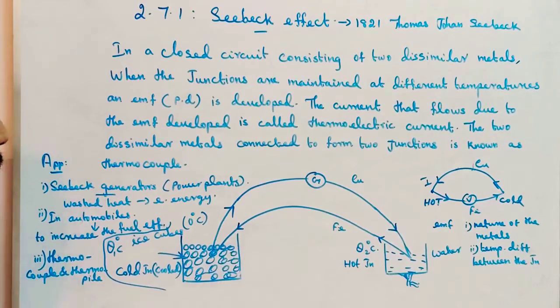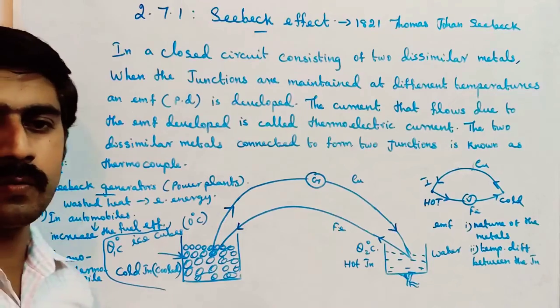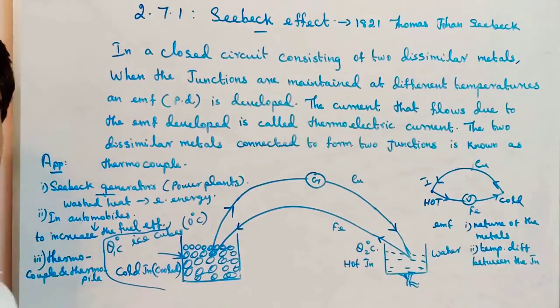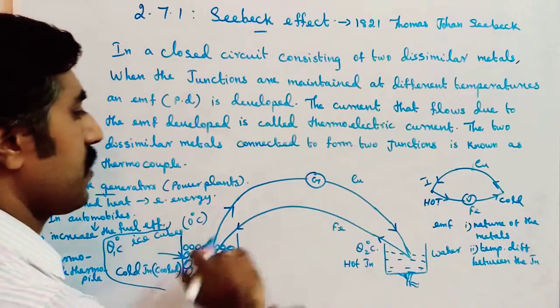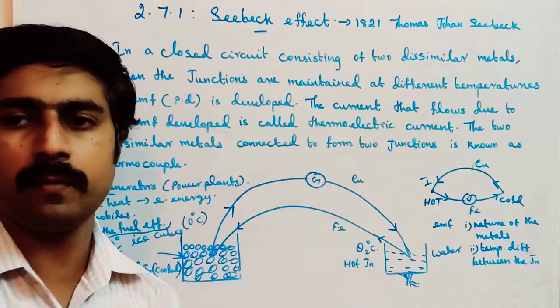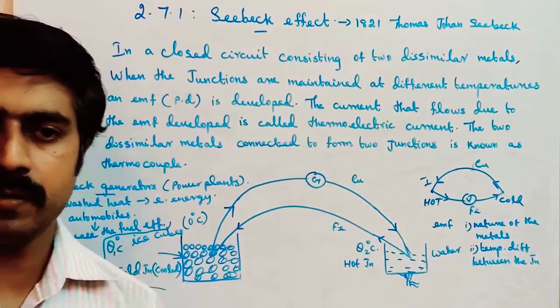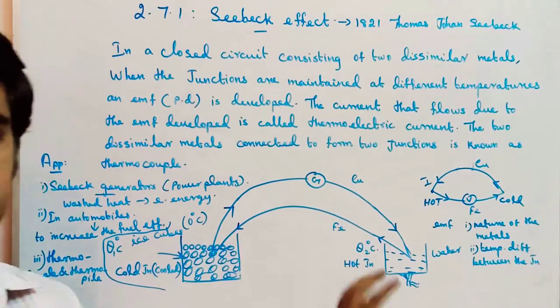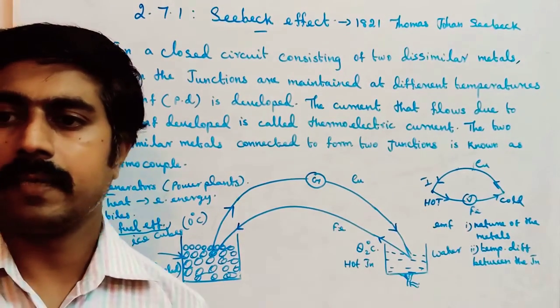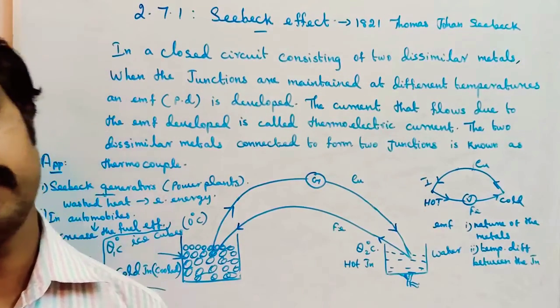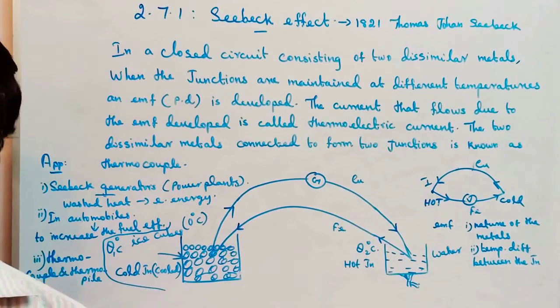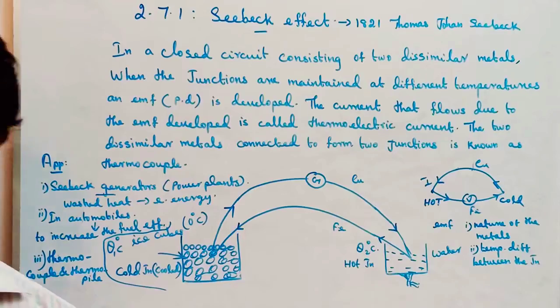The Seebeck effect is a reversible effect. When the hot and cold junctions are interchanged, the direction of current flow changes, but the magnitude value of the current remains the same. Only the direction changes, making it a reversible effect.